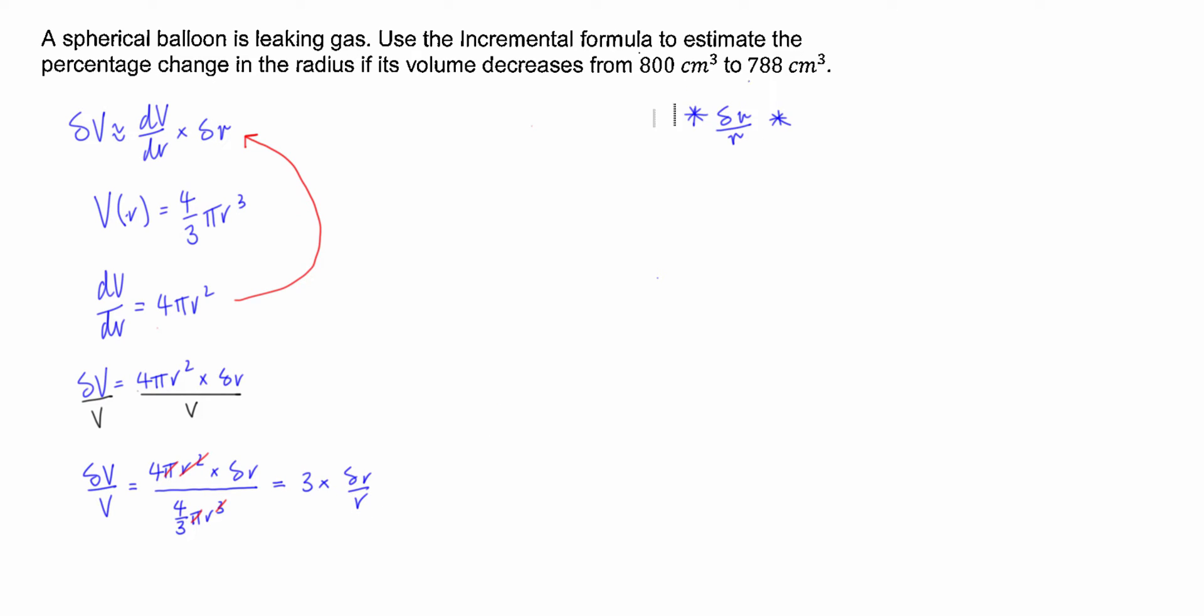Now as you can see guys we've got delta r over r here. So that's a bit of a bonus. So we're going to insert the numbers that we know. I'm just going to use red to make it a little bit more easy to see.